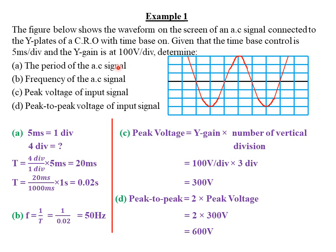For part B, we find the frequency of the alternating current signal. From waves one, frequency equals the reciprocal of period. We have already computed the period as 0.02 seconds, so frequency equals 1 over 0.02, which gives 50 Hertz as the frequency of the AC signal.